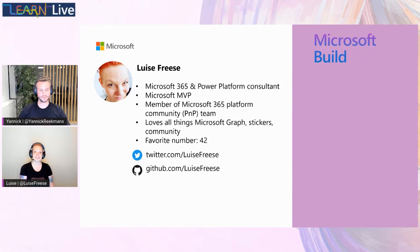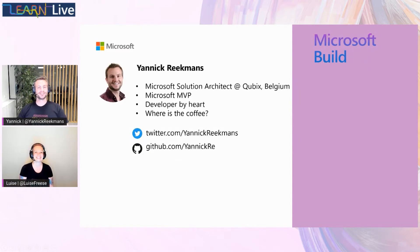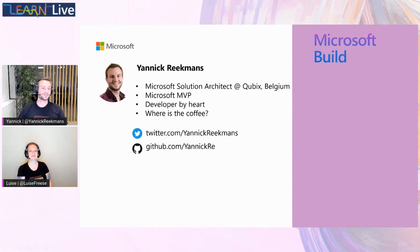And now it's time for Yannick to introduce himself. Who are you? Well, my list is a lot shorter. I'm Yannick Reekmans. I'm a Microsoft Solution Architect at Cubics in Belgium. I'm also a Microsoft MVP in Office Development. I'm a developer by heart, and I ask the important questions like: do we really need custom development? And also, where is the coffee? Because a developer turns coffee into code. You can find me on Twitter and on GitHub — all my stuff is there.